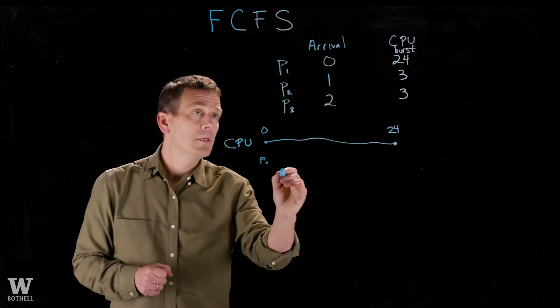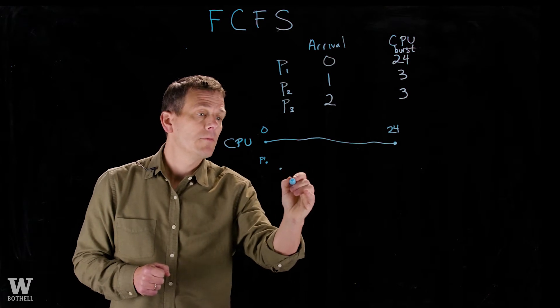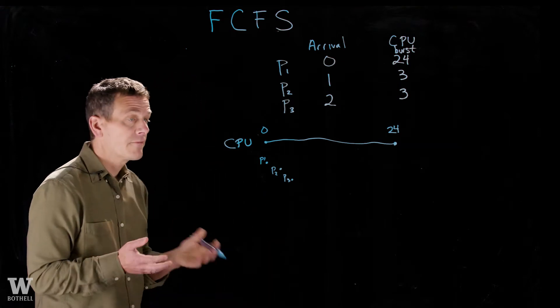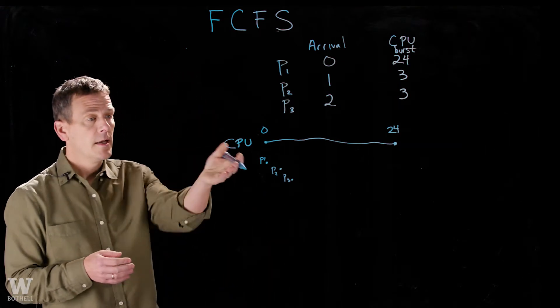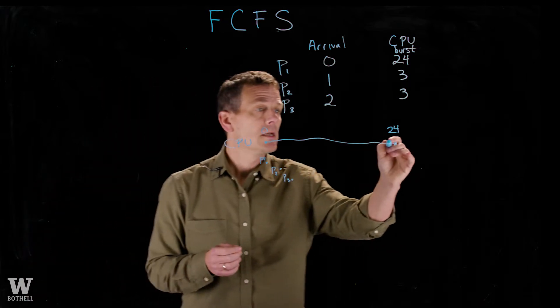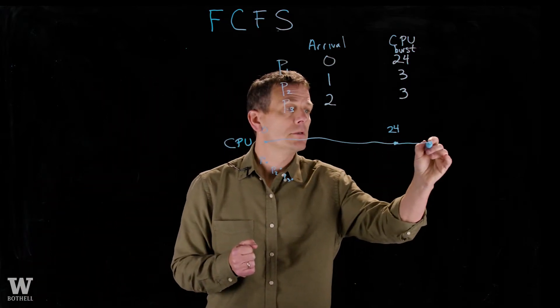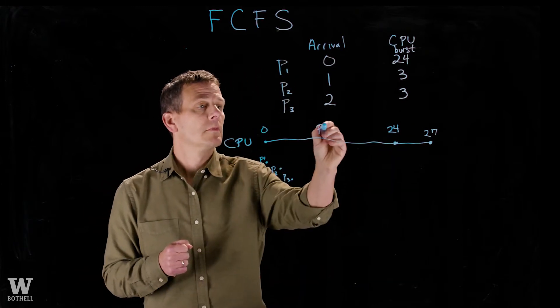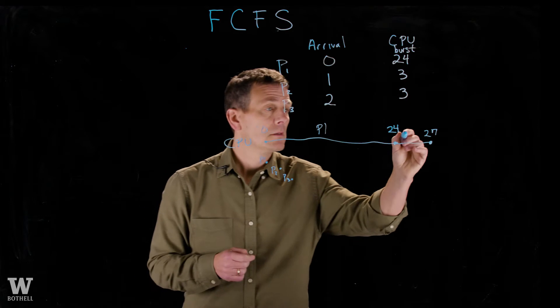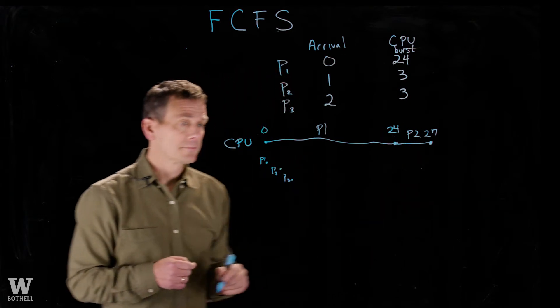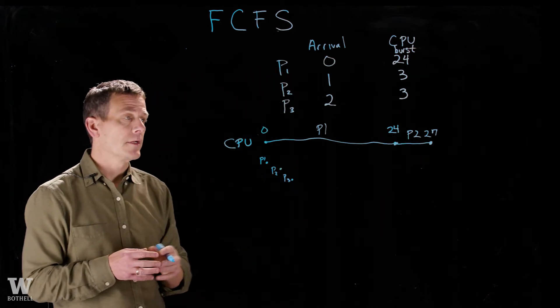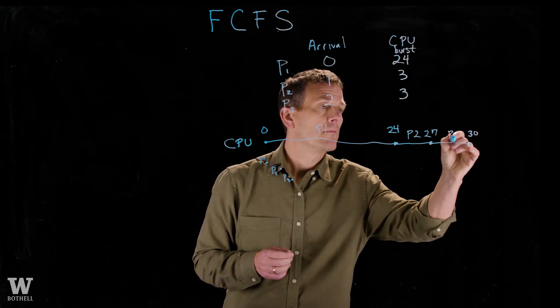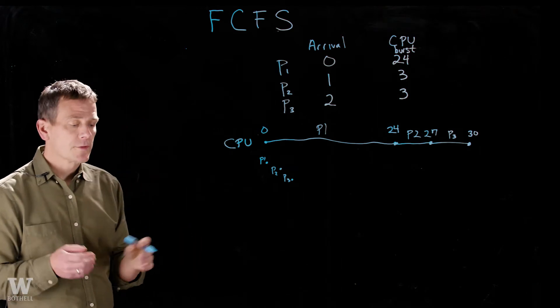Now, at this point in time, notice that P2 and P3 have also joined the queue. The first-come-first-serve algorithm just says I'm going to take the first one in, which was P2, and I'm going to run P2 until it's done, which would go until 27 time units. So P1 ran first because it started. P2 ran next. And then P3 ran, finally, for the last three time units, and we're done. That's first-come-first-serve.